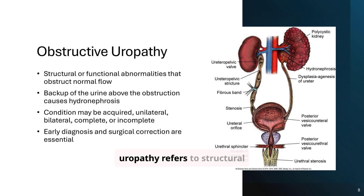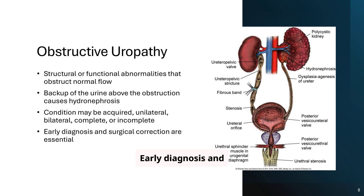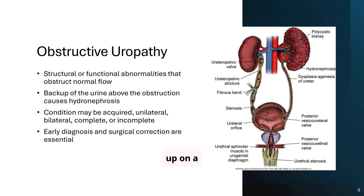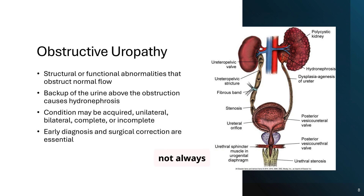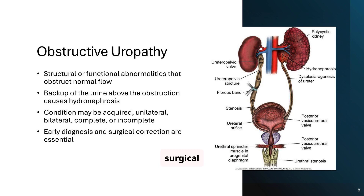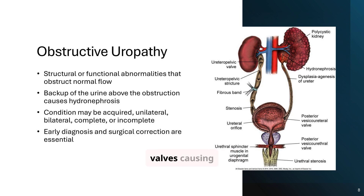Obstructive uropathy refers to structural or functional blockages in the urinary tract. This can lead to urine backup and hydronephrosis. Early diagnosis and surgical intervention are often critical to prevent long-term damage. Imagine traffic backing up on a highway — that's what happens in the kidneys when urine can't flow out. This can stretch and damage kidney structures. We rely on imaging like ultrasounds to catch it early. Most cases require surgical correction. A newborn with poor urine output may have posterior urethral valves causing obstruction — early surgery prevents kidney damage.